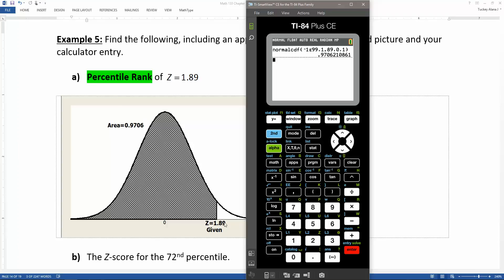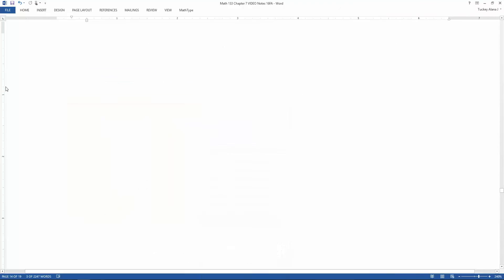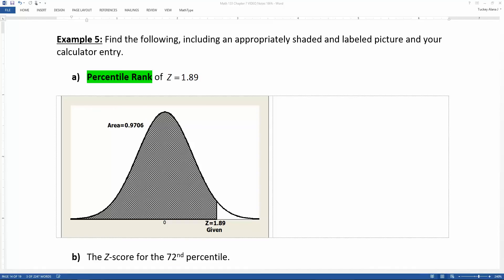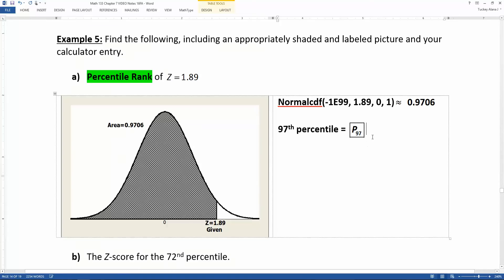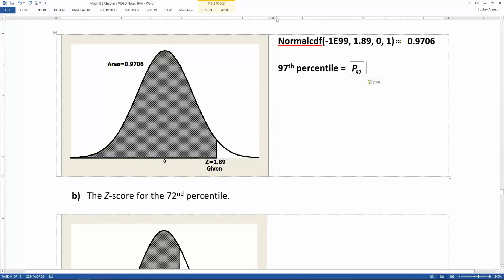That means that 1.89, a z score of 1.89 is about the 97th percentile. Because remember, percentiles, we have to round them. And our way of abbreviating that is a big capital P with a little 97 after it, or you can just say 97th percentile.